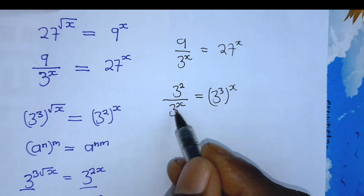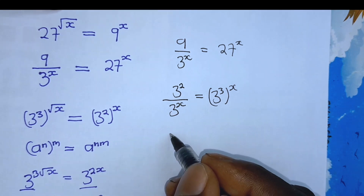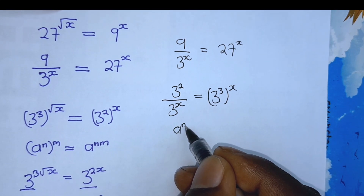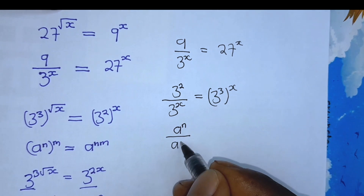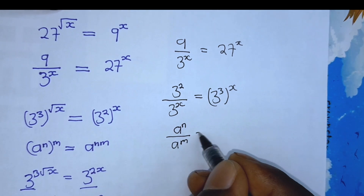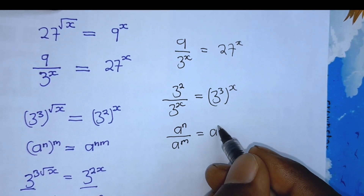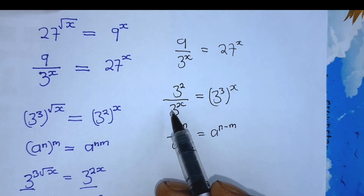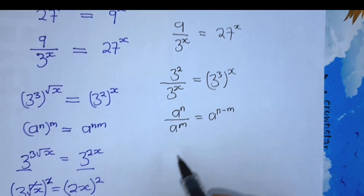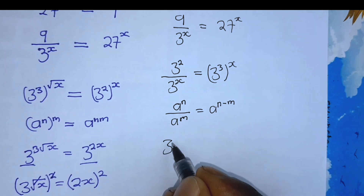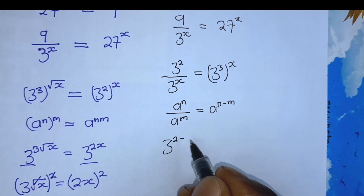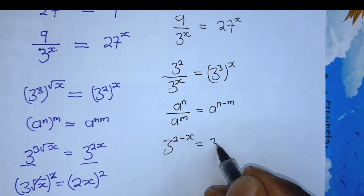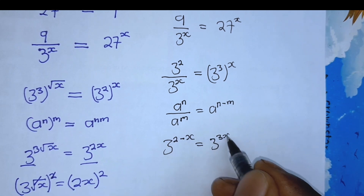Now, from here, 3 to the power of 2 divided by 3 to the power of x — remember, if you have a to the power of n divided by a to the power of m, that equals a to the power of n minus m. Applying this, we get 3 to the power of 2 minus x, which is equal to 3 to the power of 3x.